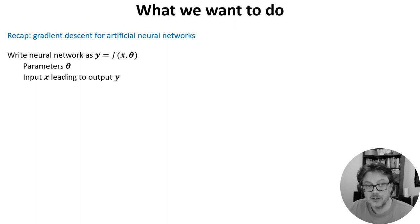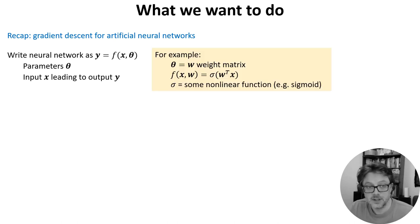First we write the neural network as a function of inputs and parameters. For example, for a one-layer neural network the parameters could be the weights and the function could be a sigmoid applied to the dot product of the weights and input vector.